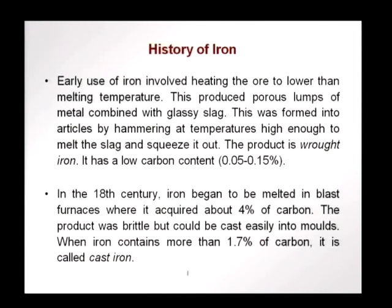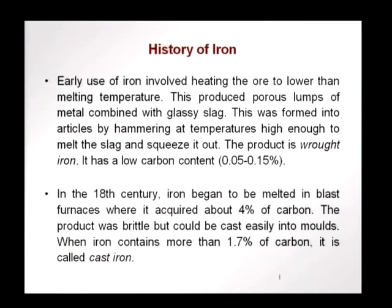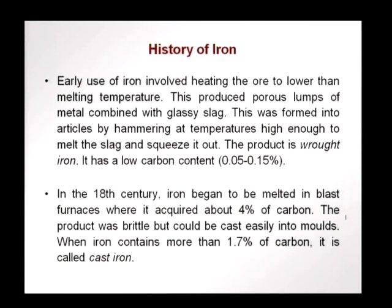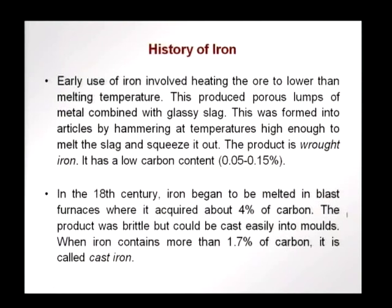Iron has been used for many centuries. The early use of iron involved heating the ore to lower than melting temperature because it was difficult to raise it to higher temperatures. This resulted in porous lumps of metal combined with glassy slag. This was made into pieces that could be used by hammering at high temperature. This hammering process squeezed out the slag after melting it. The product was called wrought iron, which has a low carbon content in the order of 0.05 to 0.15%.